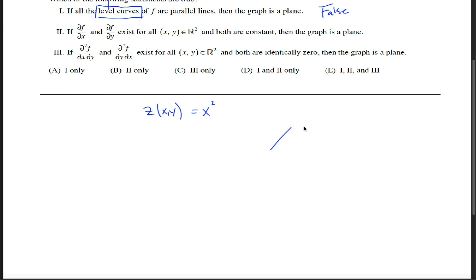Want me to draw it? Sure, I'll try. Maybe this is x, and this is y, and this is z, and I want the z-coordinate to be equal to the square of the x-coordinate, regardless of what the y-coordinate is. So when the x-coordinate is 0, I want the z-coordinate to be 0. When the x-coordinate is either 1 or negative 1, I want the height to be equal to 1.